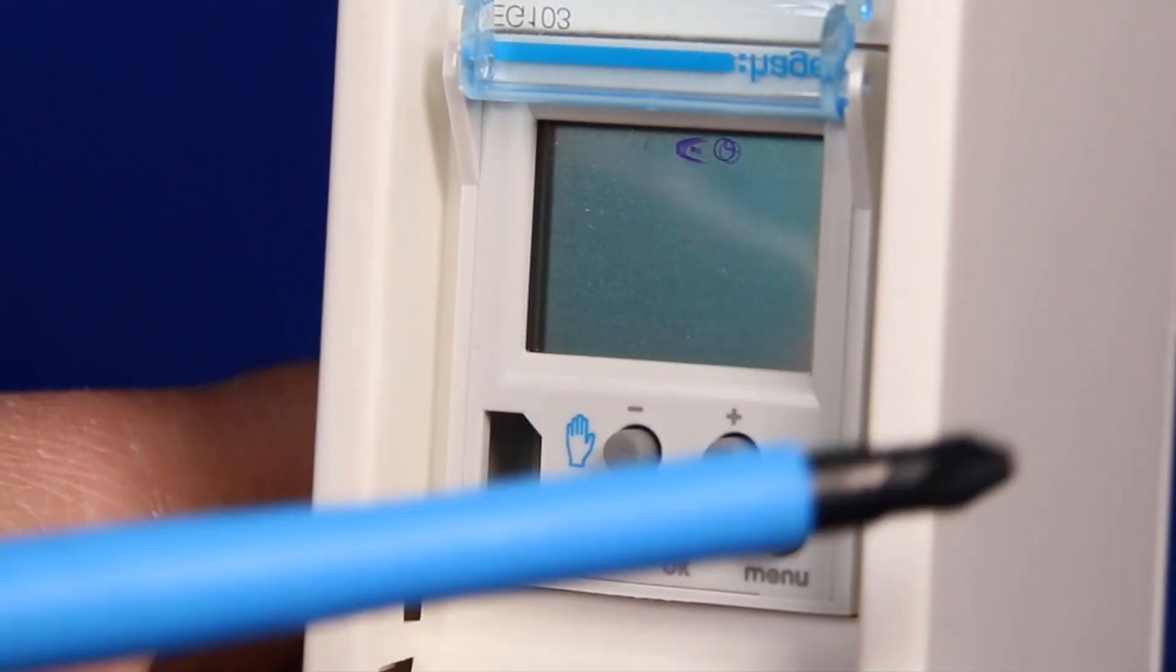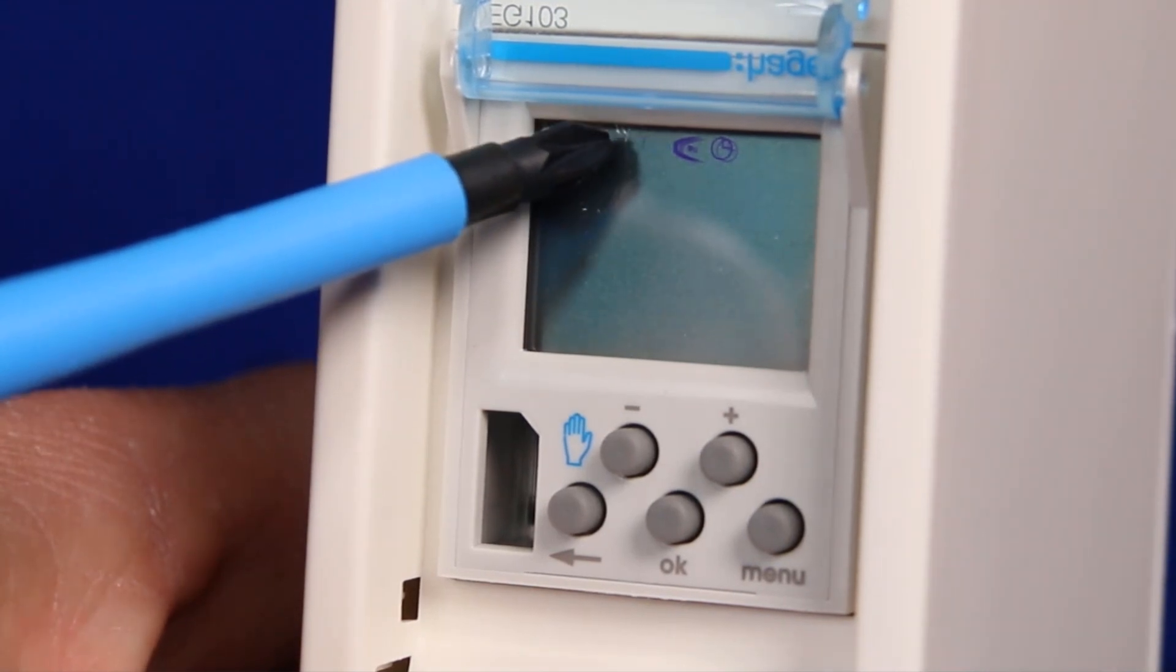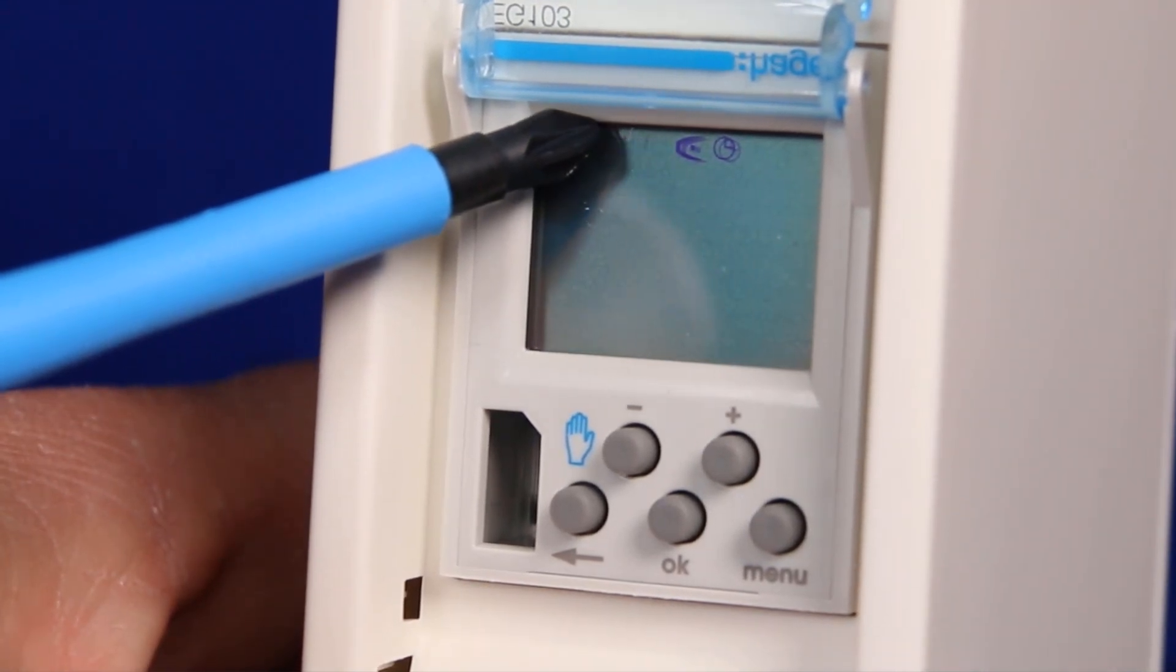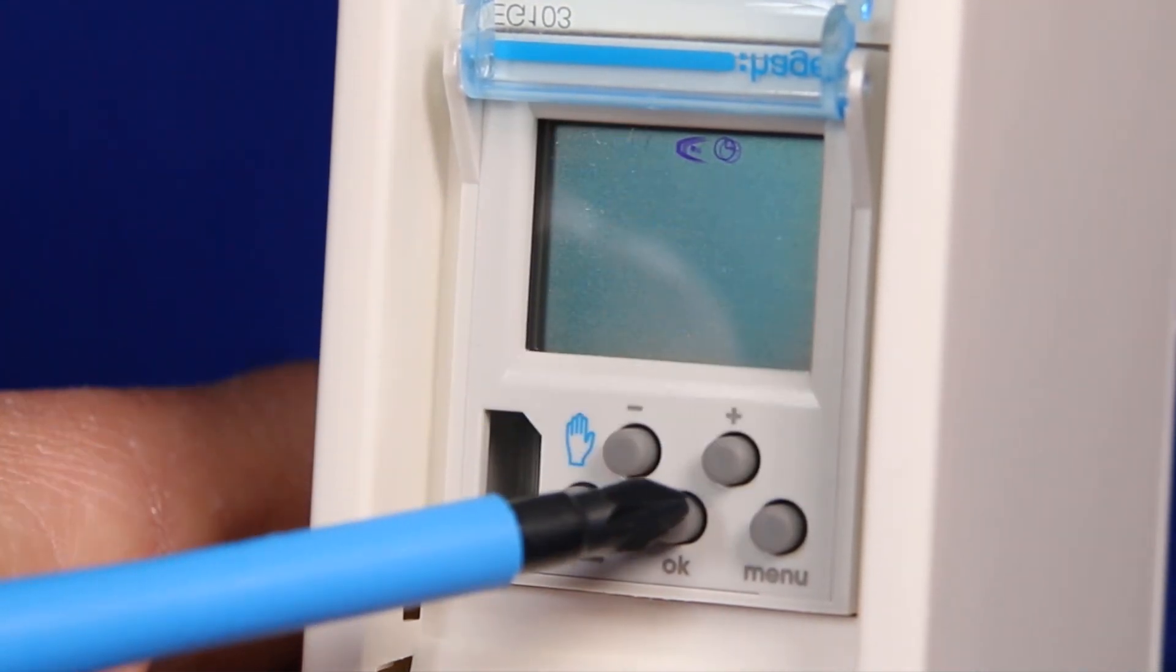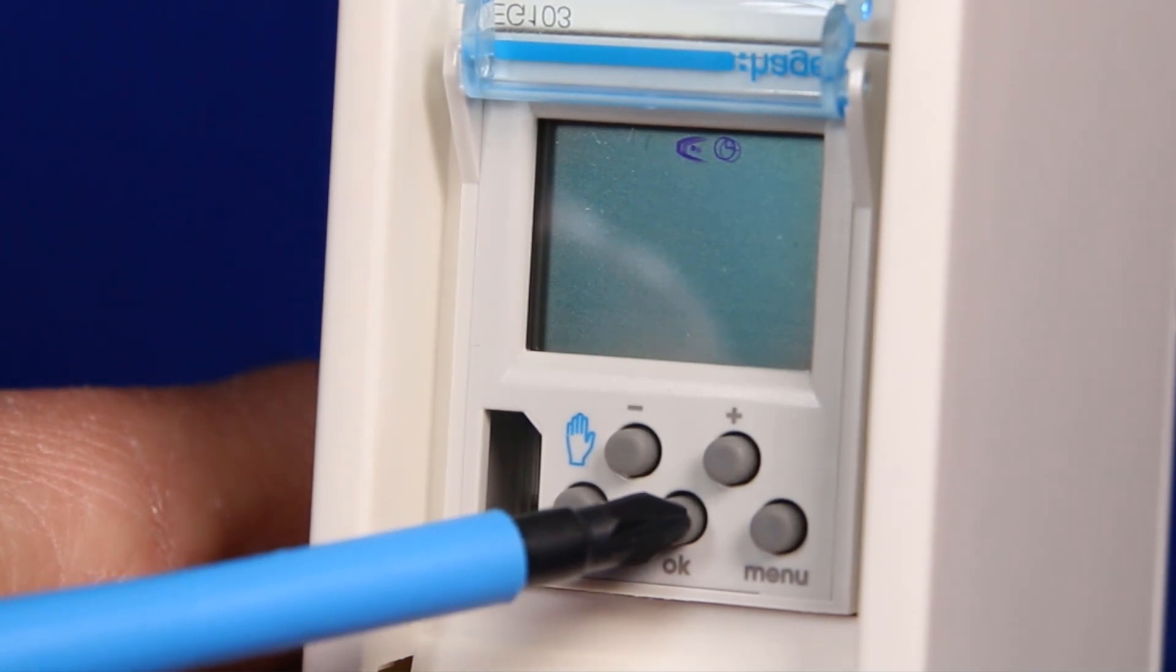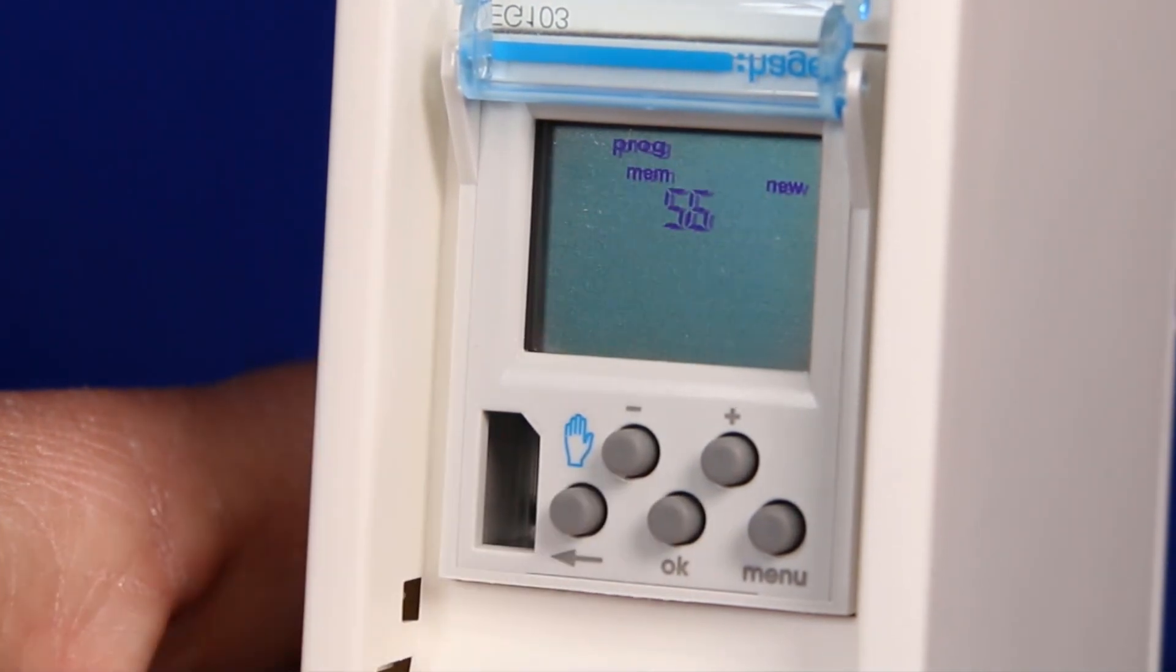Firstly then by pressing the menu button we exit automatic mode and have menu options. You can see 'prog' is flashing indicating we are now in programming mode. To select this while flashing we press ok.